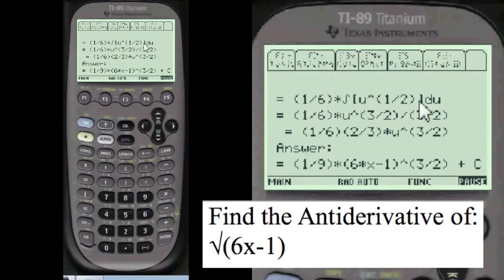So we have to bring all constants out of the integral, which we do here, 1 sixth here. We add 1 to the 1 half here, which becomes 3 halves divided by 3 halves. So we have 1 sixth, when you divide by a fraction you invert and multiply. So we inverted the fraction 2 thirds. And the answer is 1 ninth u to the 3 halves. Pretty neat, huh?